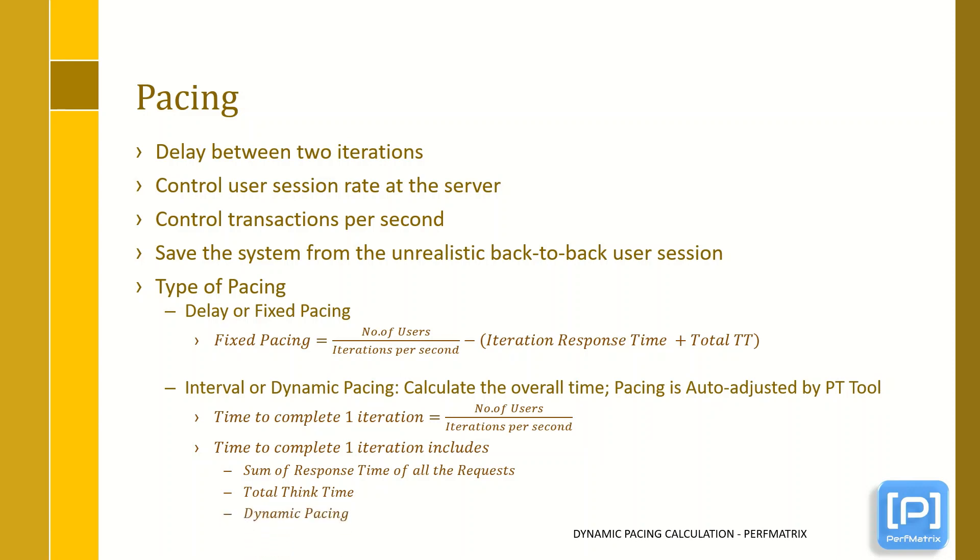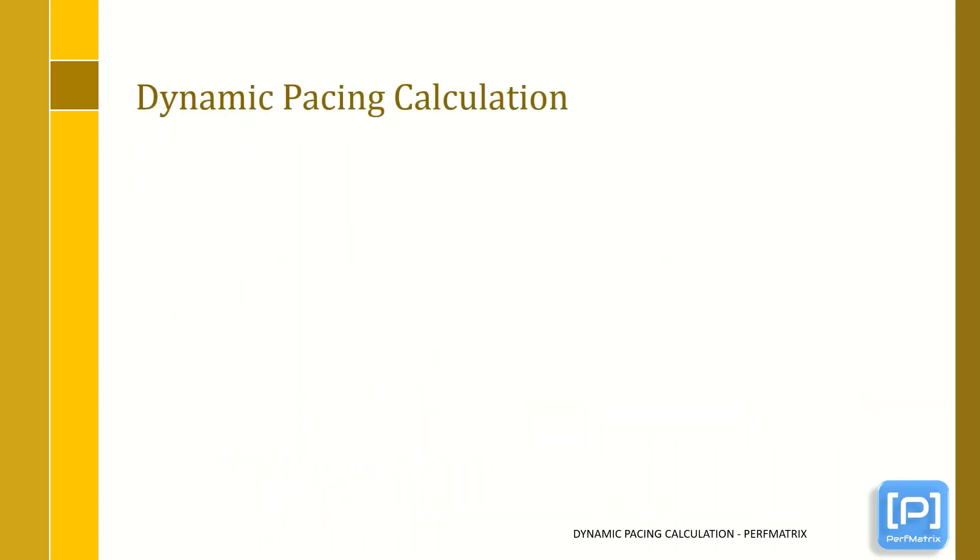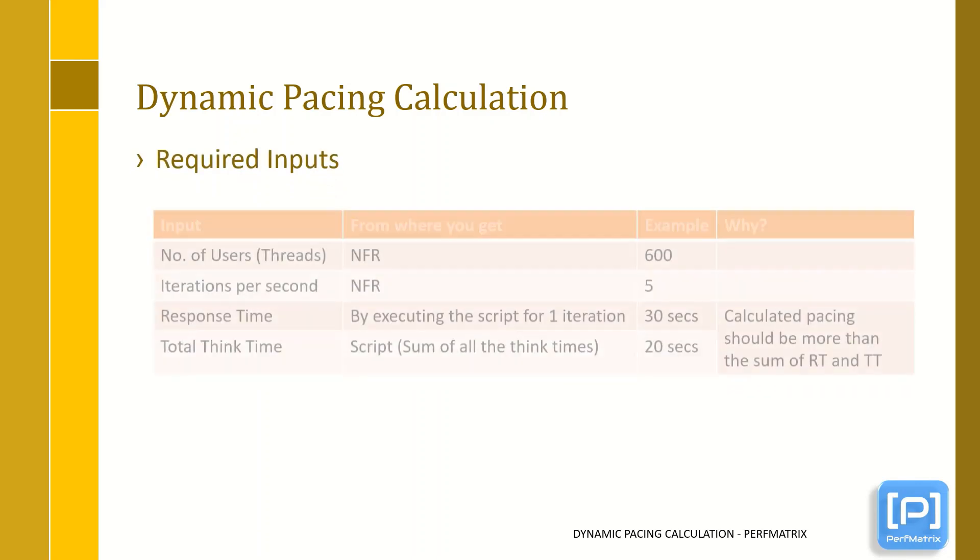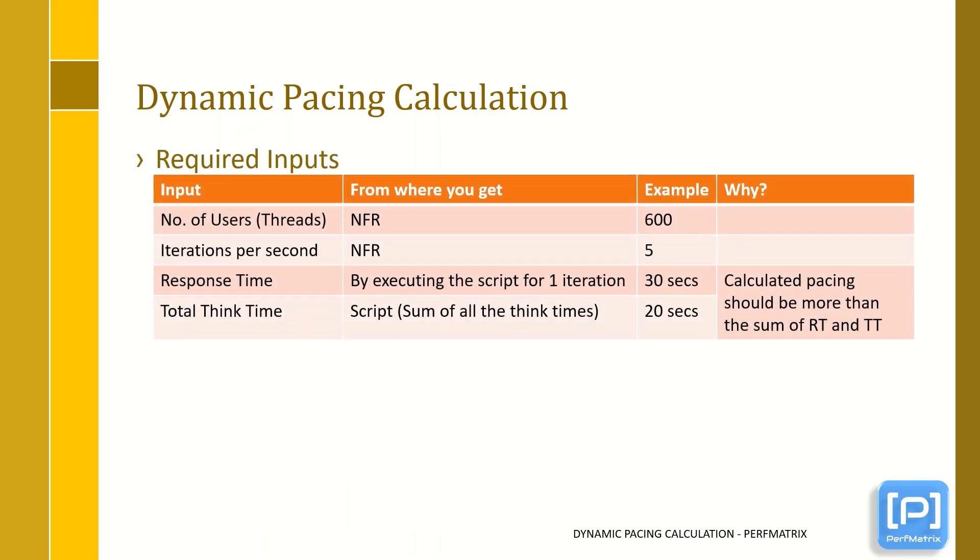Now, let's see what are the inputs required to calculate and then verify the calculated dynamic pacing. So there are four inputs, which are number of users.